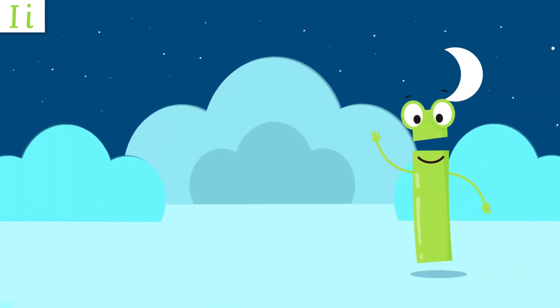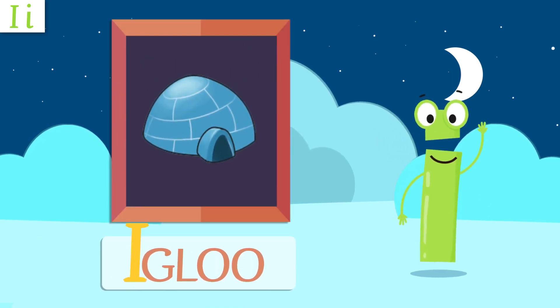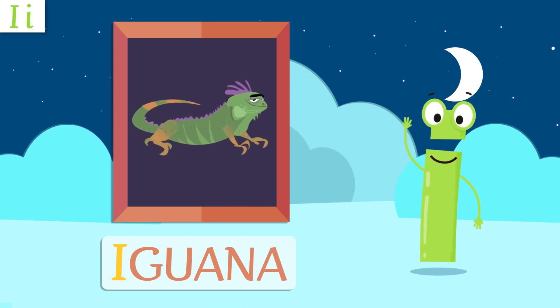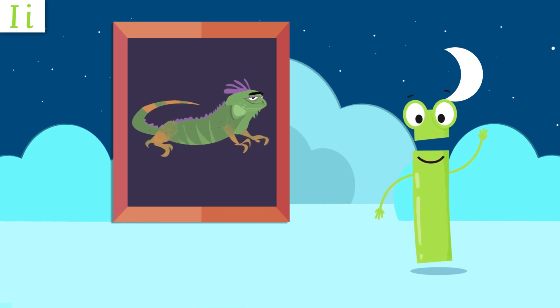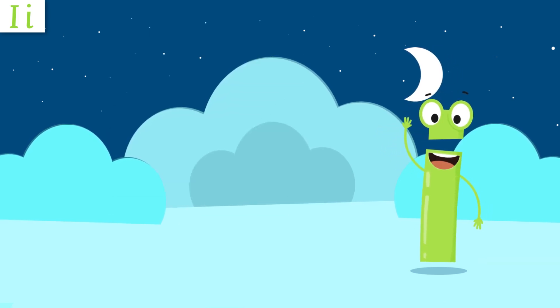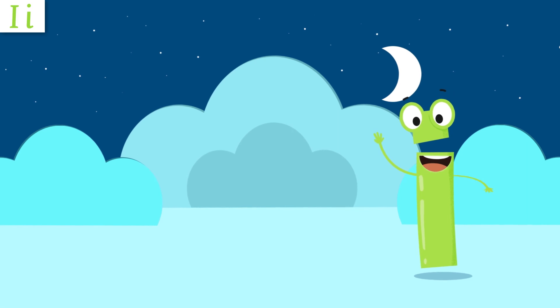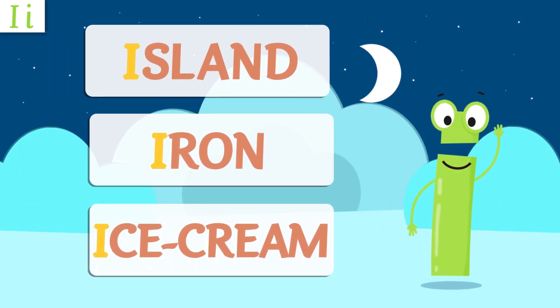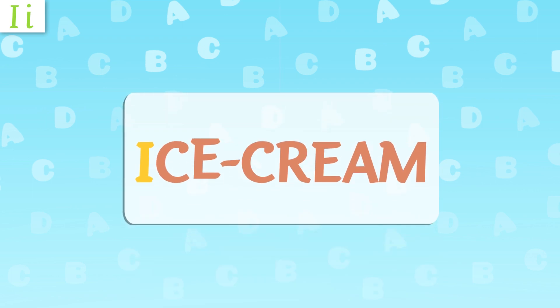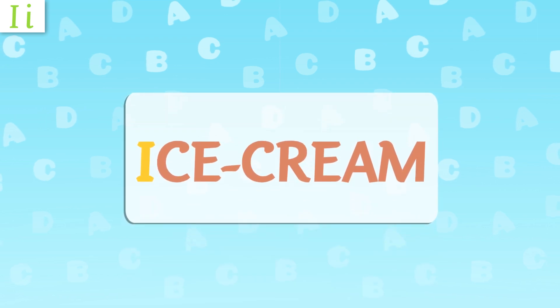Let's have a look at words I'm in. Igloo — starts with I. Igloo! Yikes, it's cold! What about iguana? What does it start with? I — incredible! Ink also starts with I. Now a little harder — these words sound different. Island. Iron. Ice cream.